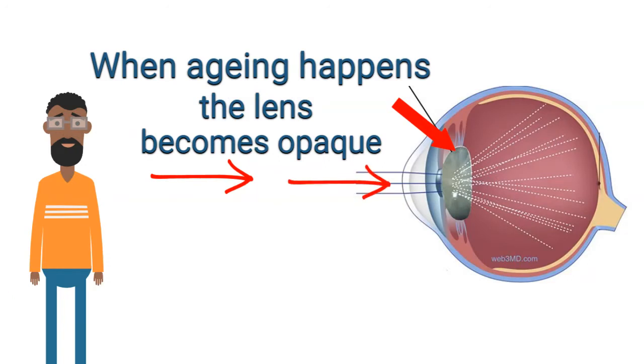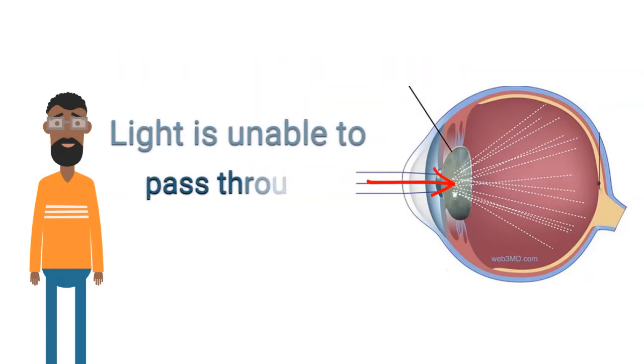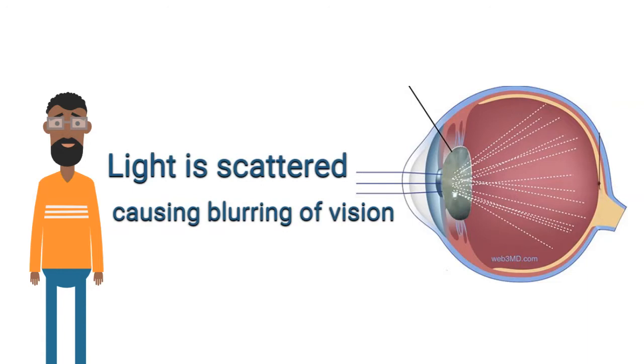When aging happens, the lens becomes opaque. Light will be difficult to pass through the eye. This will cause the light to be scattered, causing blurring of vision.